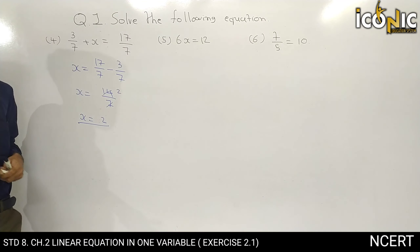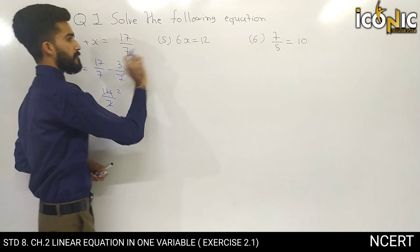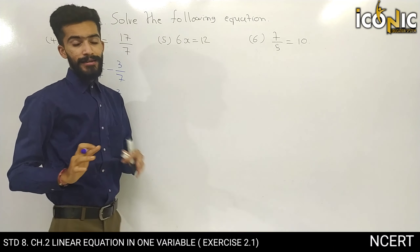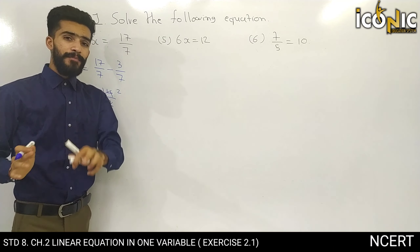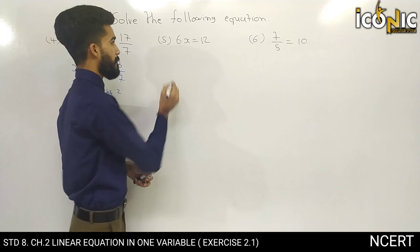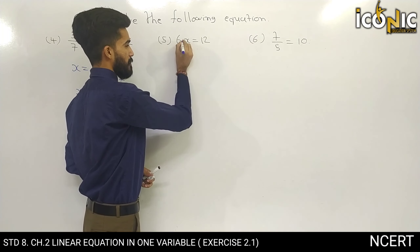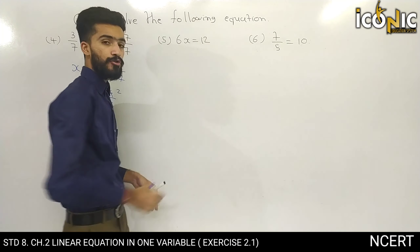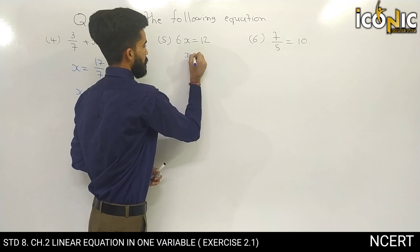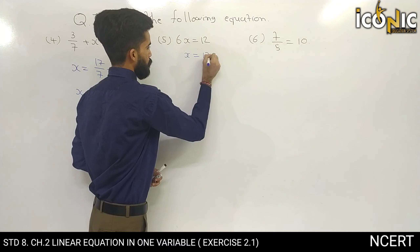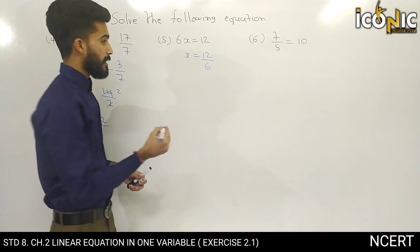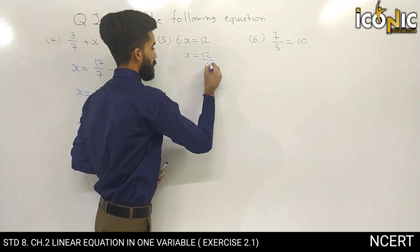In question number 5 we have 6x is equal to 12. 6x means 6 multiplied by x. Since multiplication is on one side, we go to division on the other side. So x is equal to 12 by 6, which gives x is equal to 2.